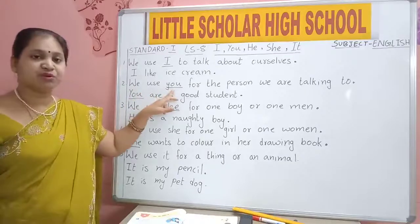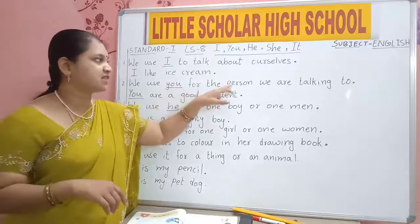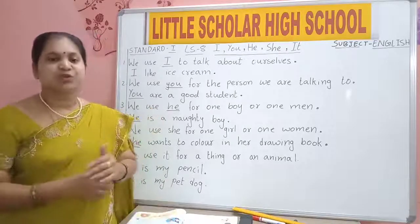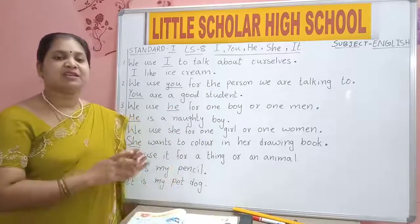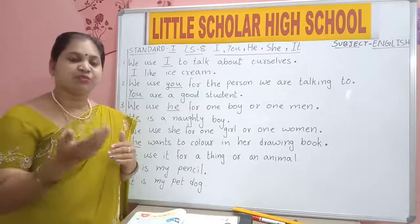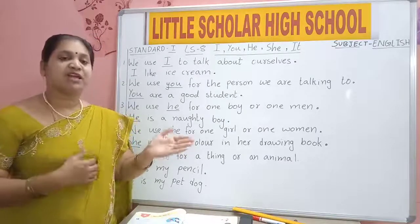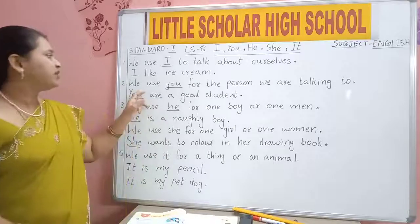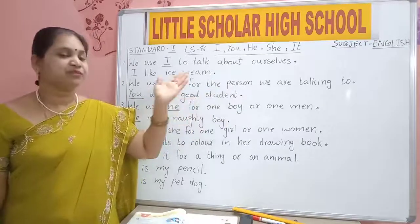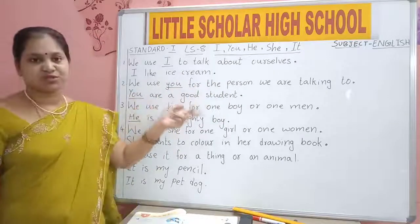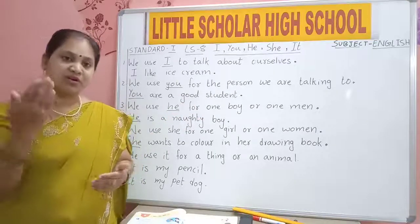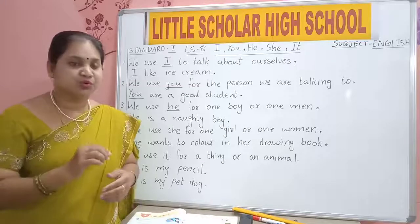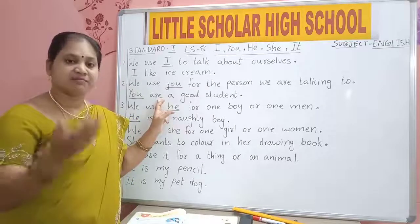Next, we use YOU for the person we are talking to. Now, to whom I am talking — I am talking to you. So what I will say? You complete this homework, children. You write this, complete this page, complete page number 21. When I am talking to you, I will say YOU. If both are talking together, you will say YOU to that person and that person will say YOU to you. We use YOU for the person we are talking to.